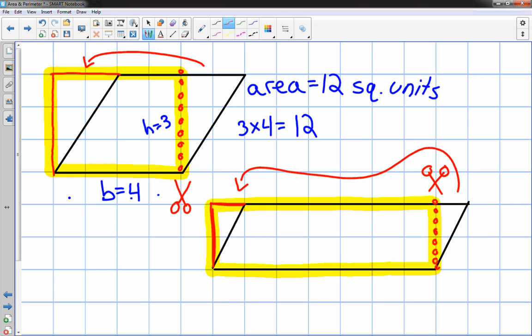And now I have a rectangle. Notice that the base hasn't changed its dimension at all. So what is it? 1, 2, 3, 4, 5, 6, 7. The base is equal to 7 and has a height of 2.